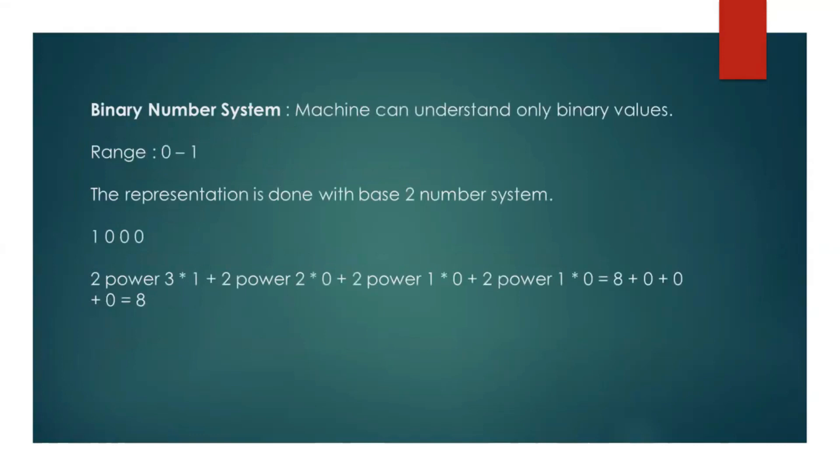As we are aware, the computer system cannot understand the decimal number format system. Computer can understand only binary number system. Machine can understand only binary values in the range of 0 or 1. That is, it can understand either 0 or 1. The representation is done with base 2 number system.